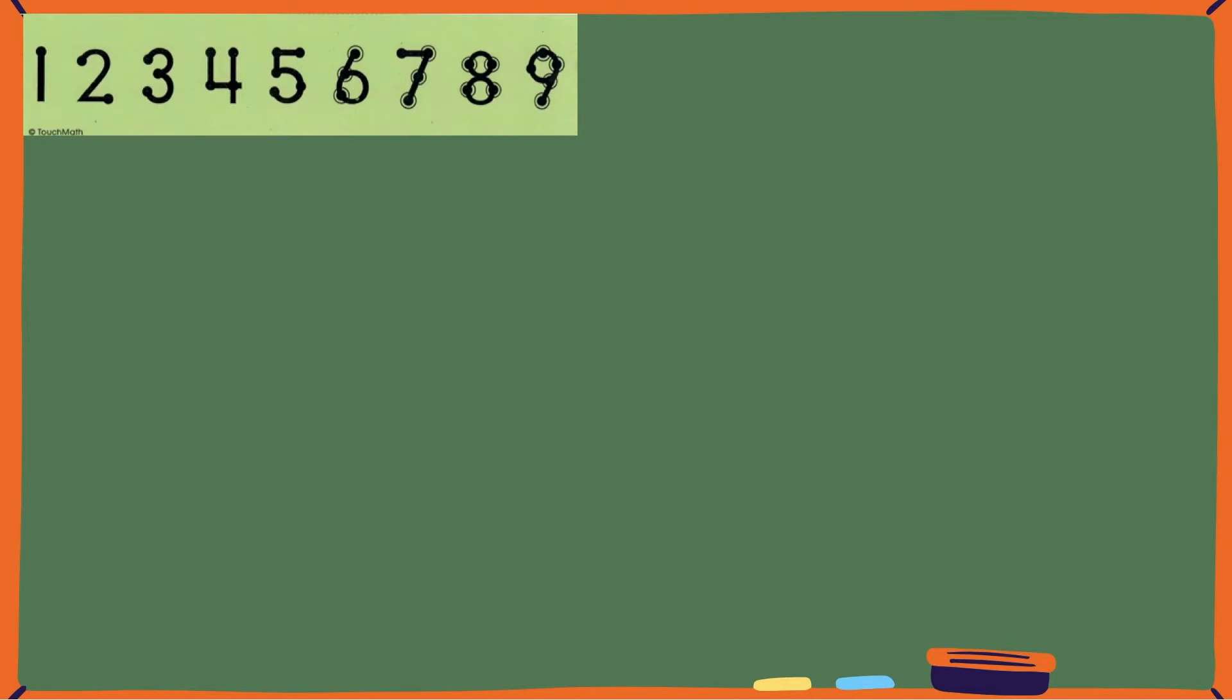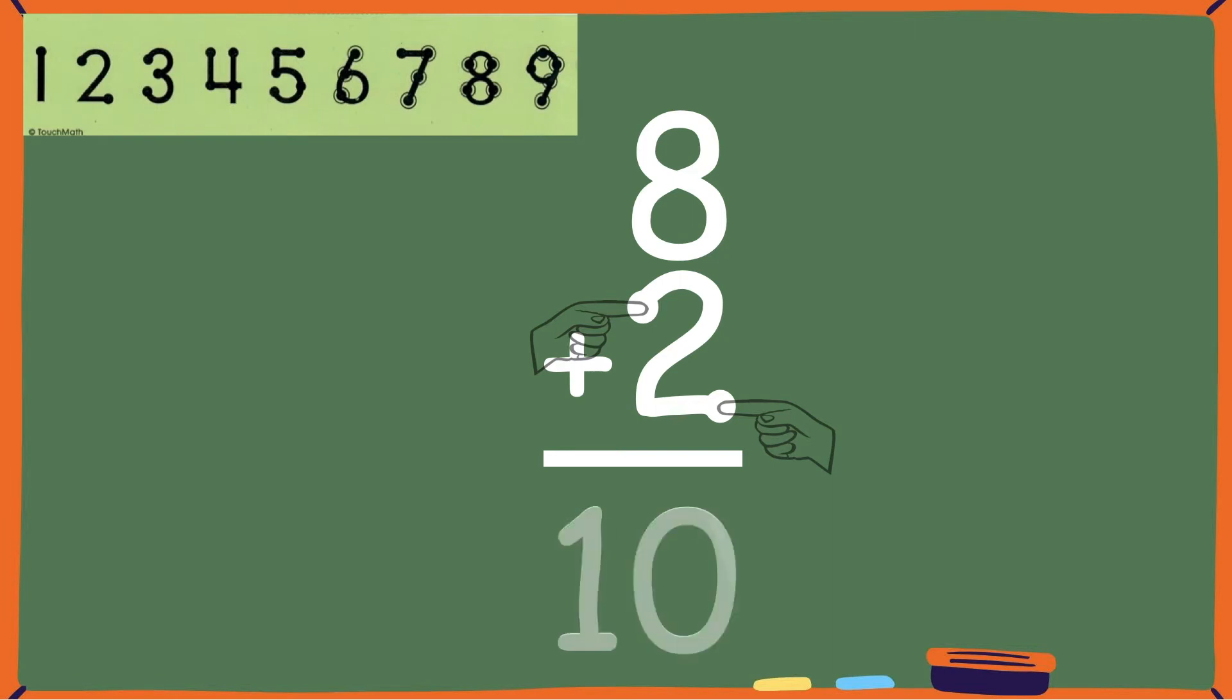Let's take a look at an addition problem. When adding eight plus two, we'll place two touch points on the number two. We'll touch and say eight and then count on with each touch point. Nine, ten. So the sum or answer to this addition sentence is ten. Eight plus two equals ten.